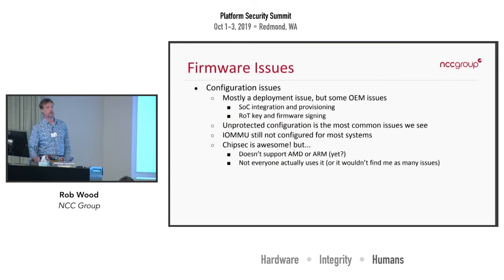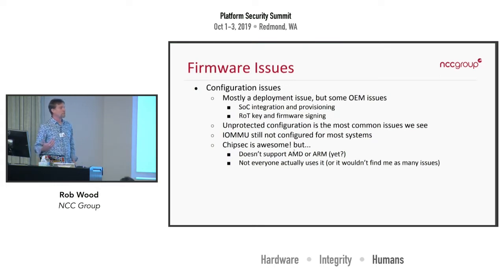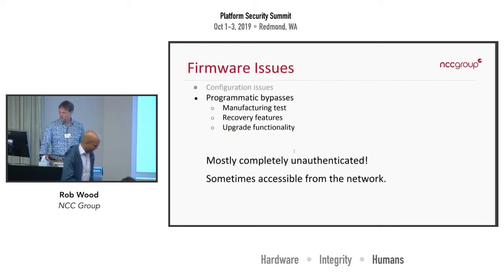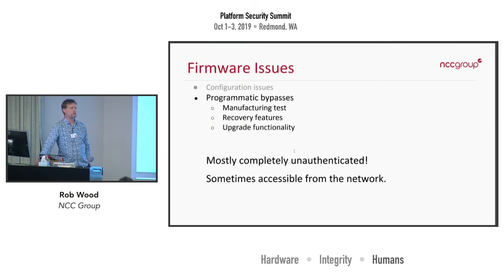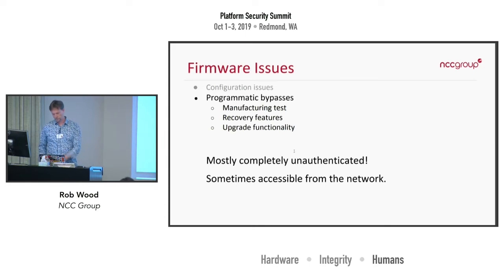ChipSec is an awesome tool that will audit a lot of the configuration on your servers. But the reality is it doesn't support AMD or ARM processors yet, and we see a lot of ARM processors on these embedded microcontrollers. Even on x86 jobs I still find issues in the configuration, so it's not as ubiquitous as it should be. Programmatic bypasses of these security features exist for legitimate reasons, but we run into problems where they're poorly authenticated — either weak authentication or just none at all. A good system will have some sort of signed debug token, but we see this done poorly quite frequently.